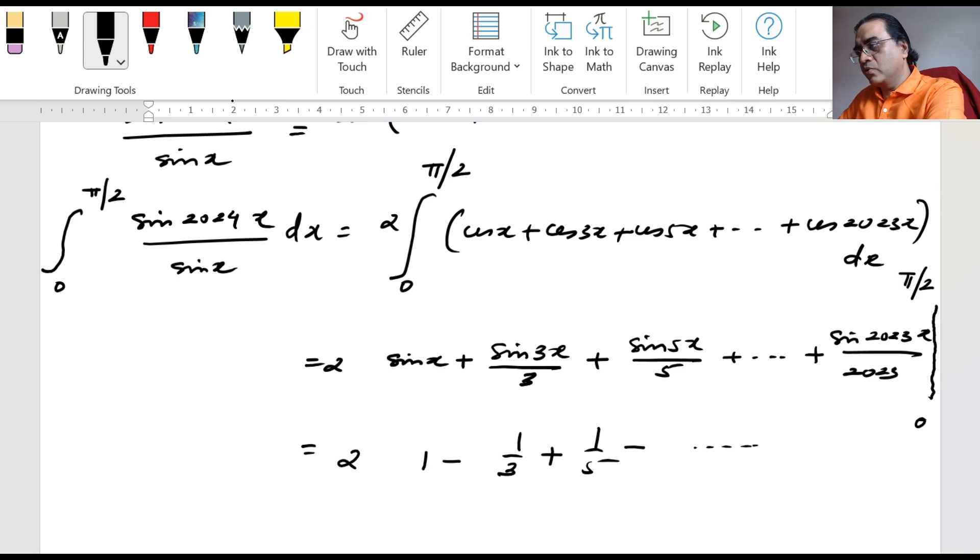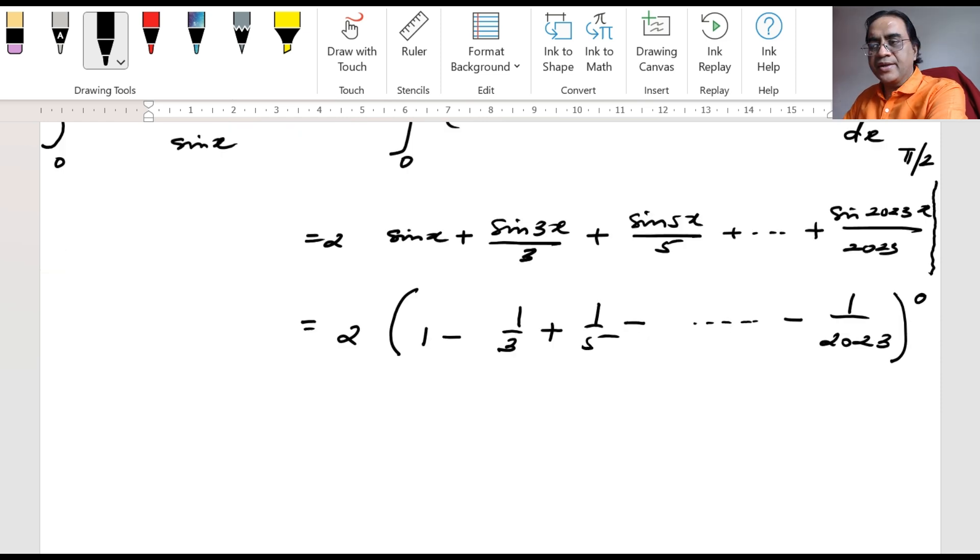As far as sin 2023 pi by 2 is concerned, that should be minus 1. So that is the answer we have got: 2 times bracket 1 minus 1 by 3 plus 1 by 5 minus 1 by 7 and so on up to minus 1 by 2023.